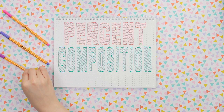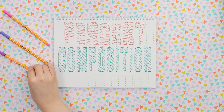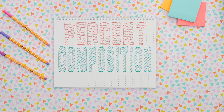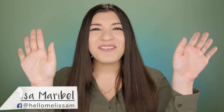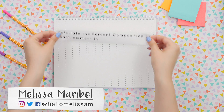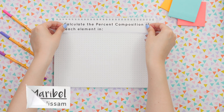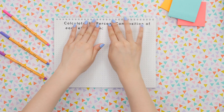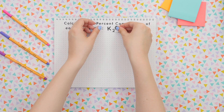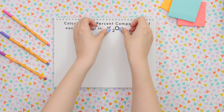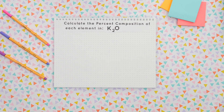If you're struggling with percent composition, I'll show you that it really only takes three simple steps. Hello everyone, I'm Melissa Maribel, your personal tutor. In this example, we are calculating percent composition of each element in the compound of potassium oxide, or K₂O.